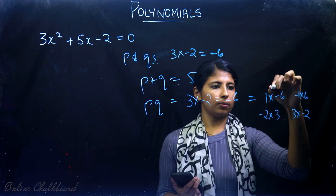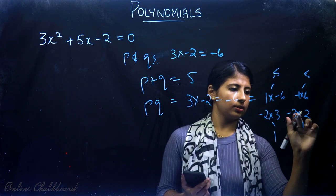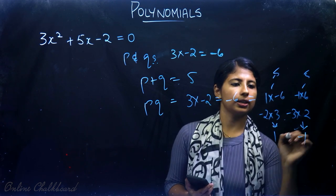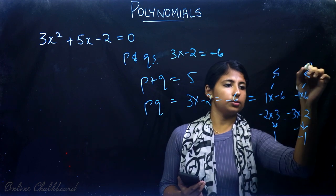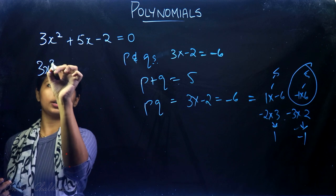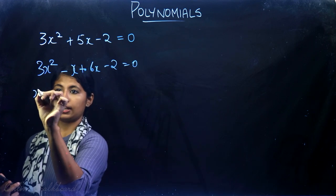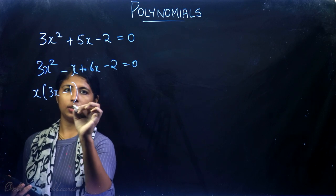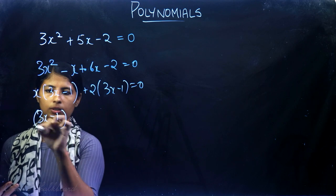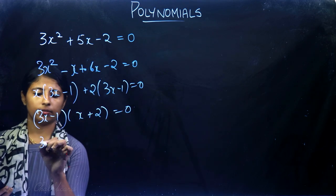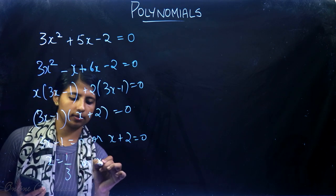Checking each case: sum of -1 and 6 is 5, which satisfies sum = 5 and product = -6. So we split it as 3x² - x + 6x - 2 = 0. Taking x common from the first two terms gives x(3x - 1), and taking 2 common from the last two terms gives 2(3x - 1). So (3x - 1)(x + 2) = 0, meaning 3x - 1 = 0 or x + 2 = 0, giving x = 1/3 or x = -2.